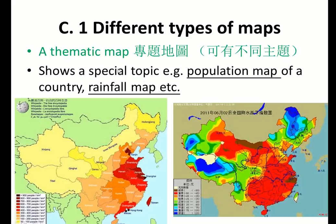The third type is called thematic map. It shows different topics. For example, we can have a population map — the red color represents the places with the largest number of people and yellow color means places with fewer people. We can also have a rainfall map where red color shows places with a lot of rainfall and blue color shows places with very little rainfall. We can draw maps on many different topics, so it is called a thematic map.